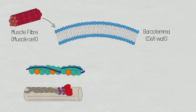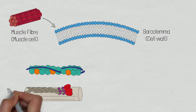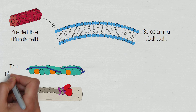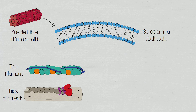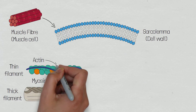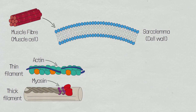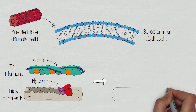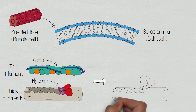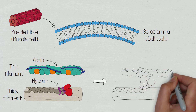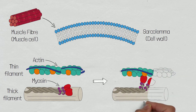The myofibrils are made up of thick and thin myofilaments. The thick filaments are composed of myosin, and the thin filaments are predominantly actin along with two other muscle proteins — tropomyosin and troponin. Muscle contraction is caused by the interaction between actin and myosin as they temporarily bind to each other.